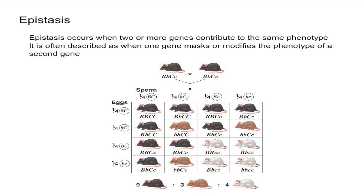One last thing to mention: there are a bunch of different types of epistasis ratios. You have the 9 to 3 to 4 ratio, and another common one is a 9 to 7 ratio. We're going to talk more about that in future videos about complementation.